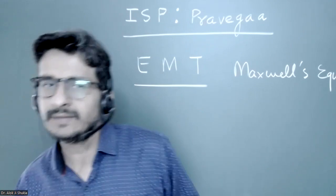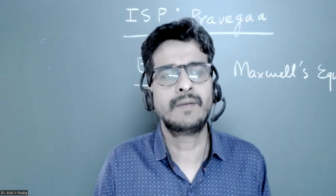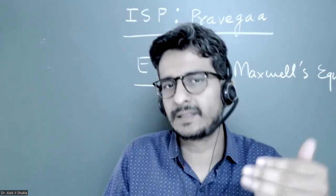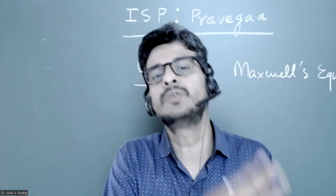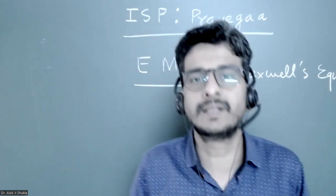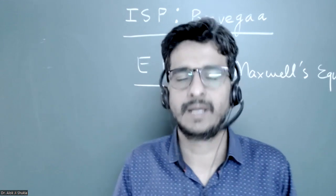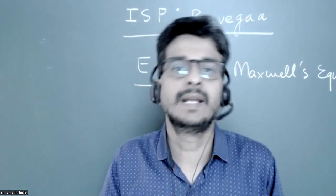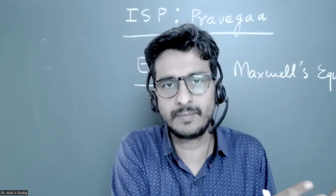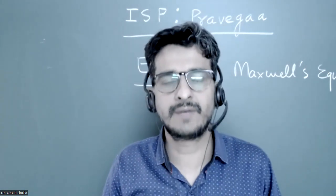Try to read everything quickly. If you have the four Maxwell's equations — the first, second, third, and fourth — try to see the derivations, like from Coulomb's law, how you can write the differential form. Then Ampere's law: you have the integral form which you did in class 12th, and how you can write it in differential form.